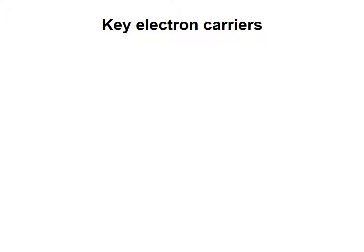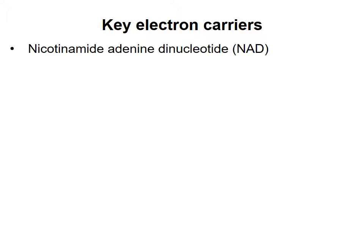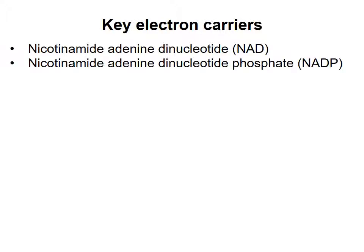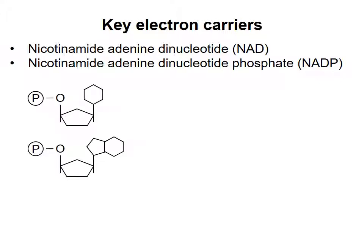These molecules accept electrons in some reactions and donate them in others. Two key molecules of this type are nicotinamide adenine dinucleotide (NAD) and nicotinamide adenine dinucleotide phosphate (NADP). These molecules are very similar to each other in terms of their basic structure. As their name suggests, each contains two nucleotides. As we saw before with ATP, a nucleotide contains a monosaccharide, to which is joined a nitrogenous base and at least one phosphate group.